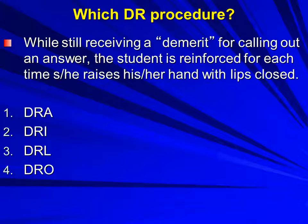The youngster is still going to get a demerit for calling out an answer — we're going to continue with that. But we are going to reinforce the youngster for each time he or she raises a hand with lips closed. The kid calls out answers — that's our target behavior. We want to replace it with raising of the hand with lips closed. We can't call out the answer if our lips are closed. We have an incompatible behavior that we are promoting. D-R-I.